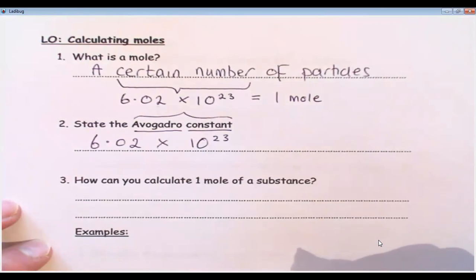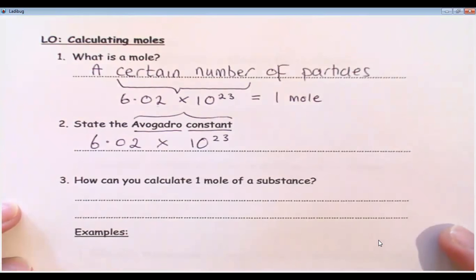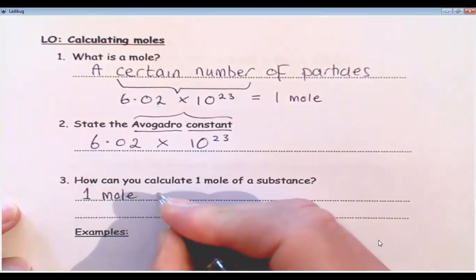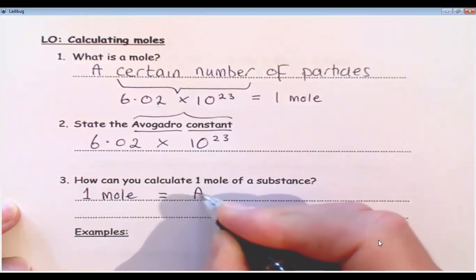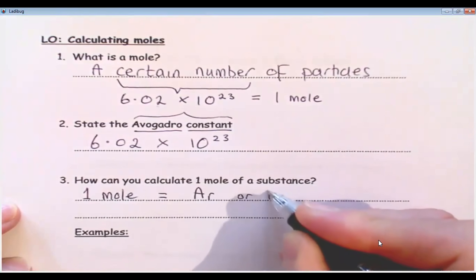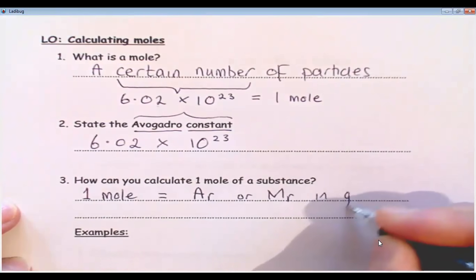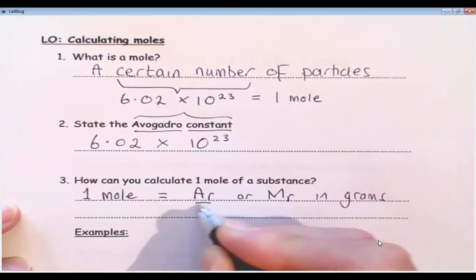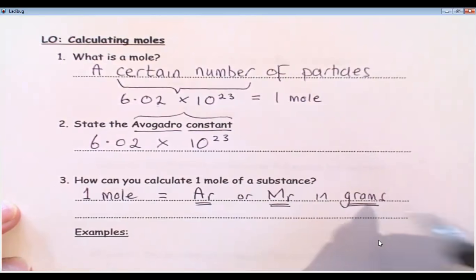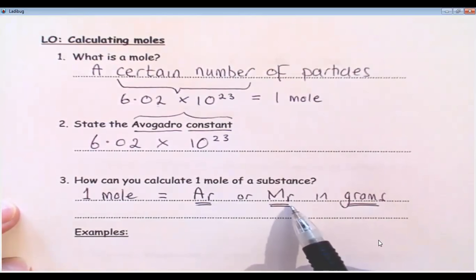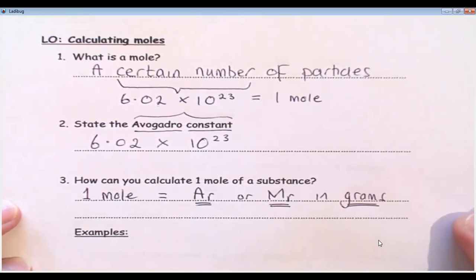So state the Avogadro constant — it is 6.02 times 10 to the 23. That's what we call the Avogadro constant: it's the number of particles in one mole. Question three says: how can you calculate one mole of a substance? It's very simple. One mole equals the AR or MR of the substance in grams. AR stands for relative atomic mass; MR is the relative formula mass or relative molecular mass. It's easier if I show you some examples.